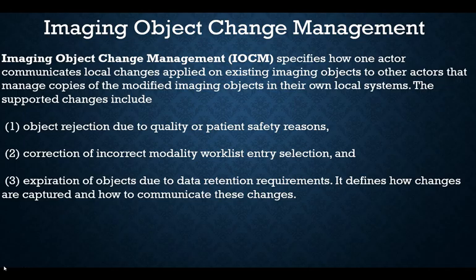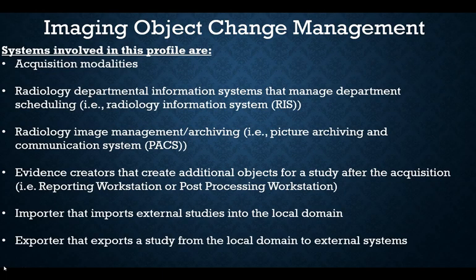Imaging object change management specifies how one actor communicates local changes applied to an existing imaging object to other actors that manage copies of the modified imaging objects in their own local systems. Supported changes include object rejection due to quality or patient safety reasons, correction of incorrect modality worklist entry selection, and expiration of objects due to data retention requirements. This profile addresses the problem of what happens when the CT tech discovers registration misspelled the patient's name and needs to propagate that correction to all other systems.